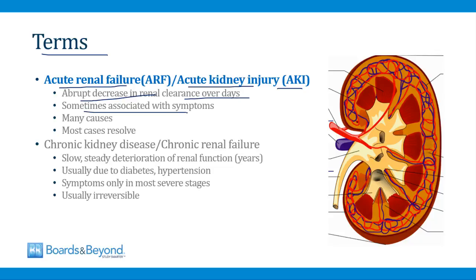Acute renal failure is sometimes associated with symptoms, sometimes even at the outset of acute renal failure, and there are many causes which we'll talk about in this video, but most of them resolve. Most people who develop acute renal failure do not go on to have permanent kidney disease.